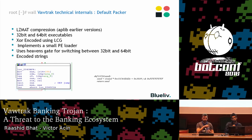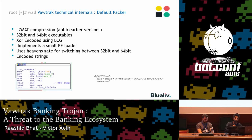To load the executable into another process, Vawtrak uses a small PE loader to fix the imports and fix the relocation in the foreign process. If the base executable is 32-bit but the system is found to be 64-bit, it uses Heaven's Gate technology to switch between 32-bit and 64-bit. Additionally, in the packer, the strings are encoded. This is the representation of the LCG algorithm and the seeds used.